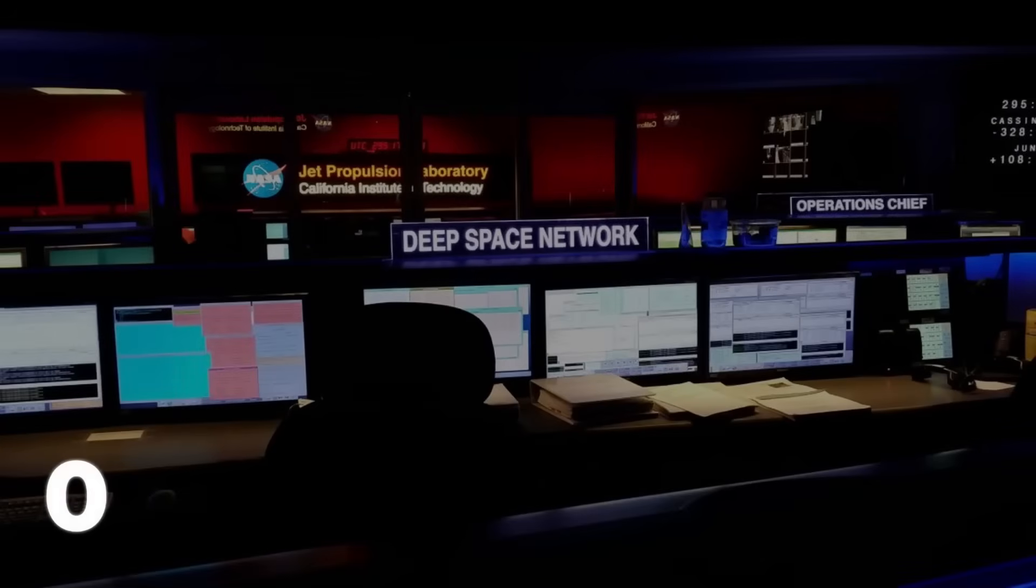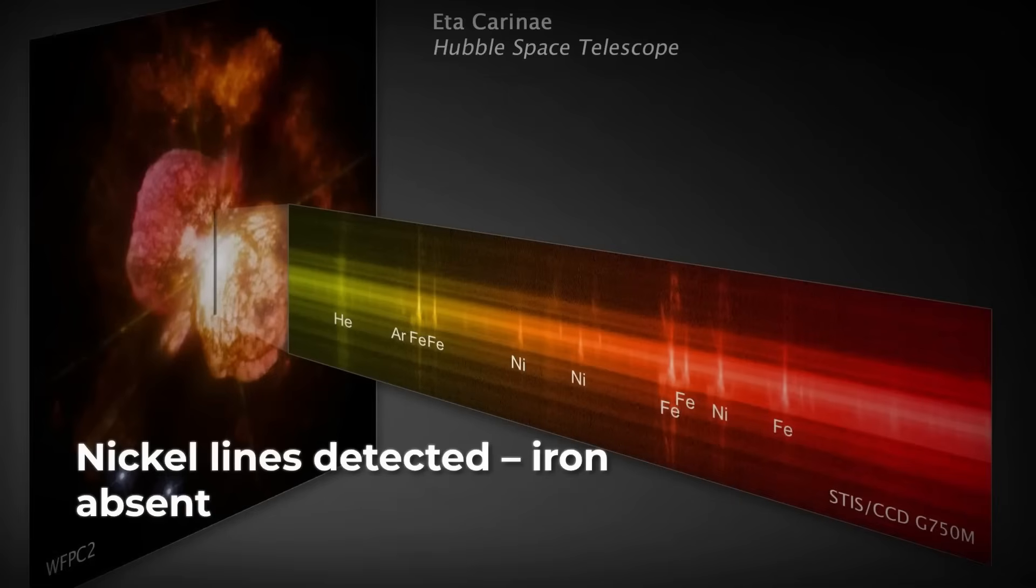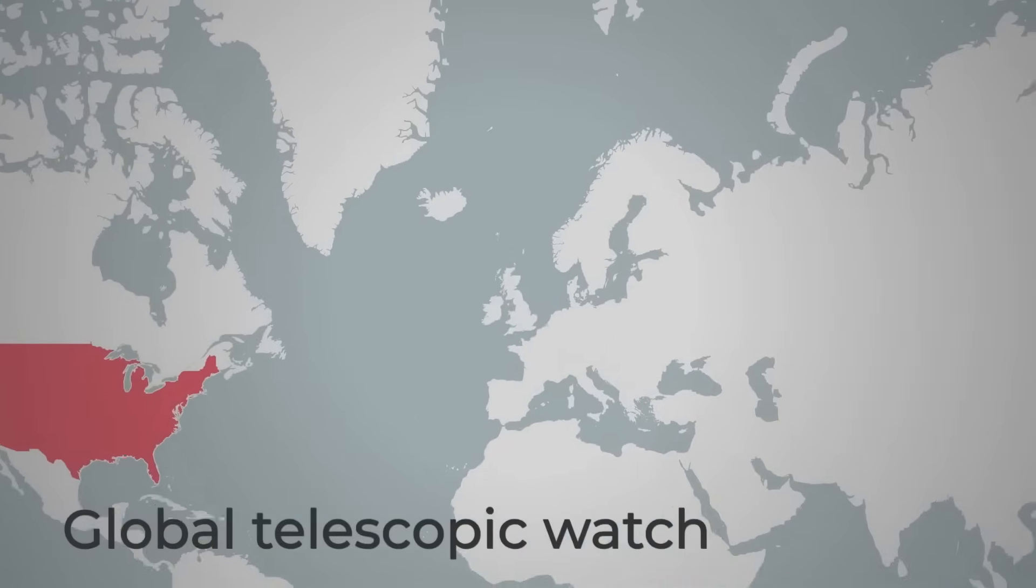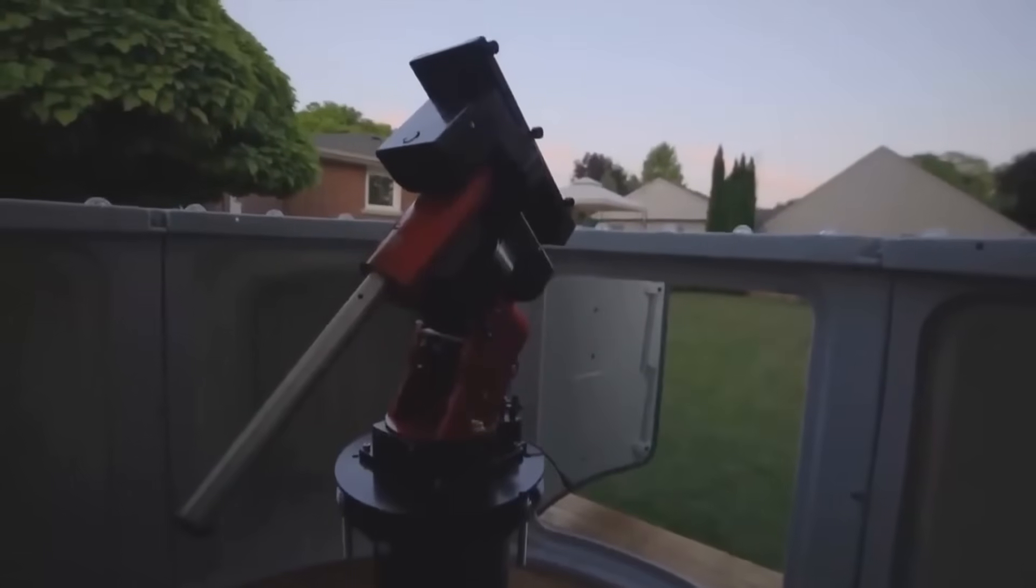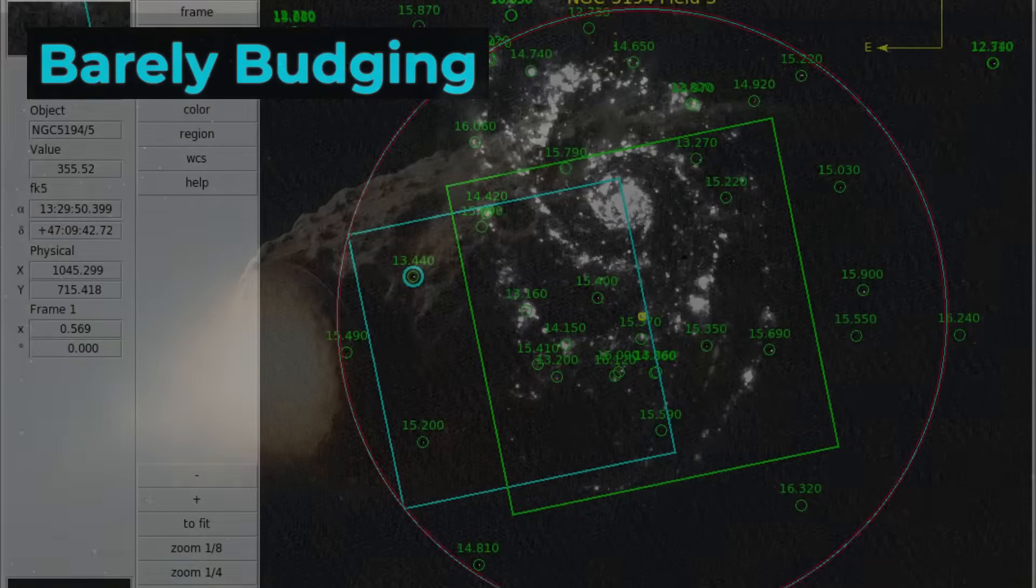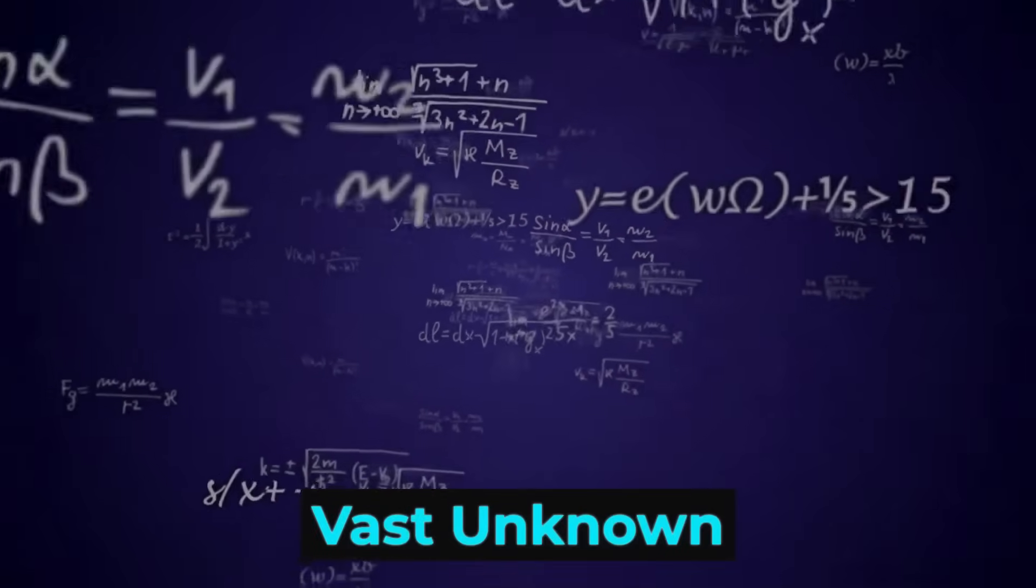This contradiction is striking. The coma is there, the jets are visible, but the expected rocket push is missing. If Atlas were truly just ice and rock, its outgassing should have nudged it far more than we observe. The numbers simply don't match up. So, what does this mean? Either Atlas is unusually massive and dense, far beyond what its brightness suggests, or something is actively stabilizing its path, keeping it locked in place against the forces that should move it. Natural explanations are struggling to keep up, and the mystery deepens with every new observation.